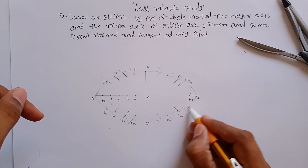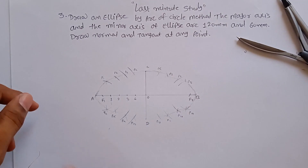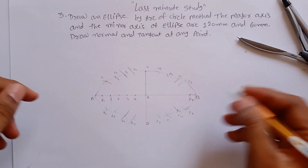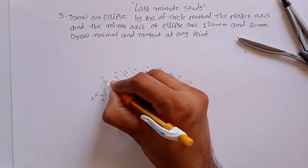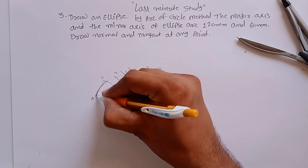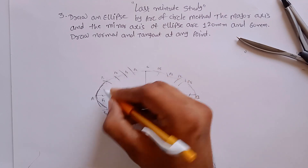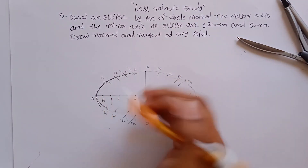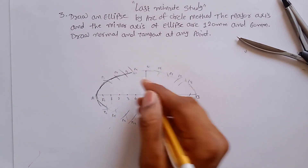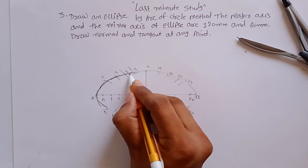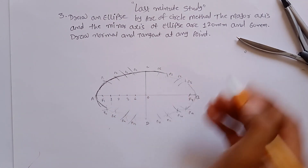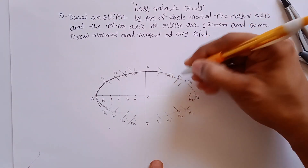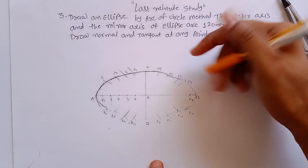Initially you have to construct very thin construction lines, and then you can make them dark. Curves are a free-hand drawing, so you have to draw them by free hand.